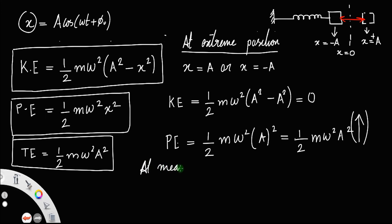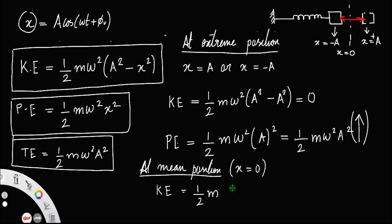At mean position, x = 0. Kinetic energy = ½mω²(A² - 0) = ½mω²A², which is maximum. Potential energy = ½mω²(0)² = 0. So at mean position, kinetic energy is maximum and potential energy is zero.